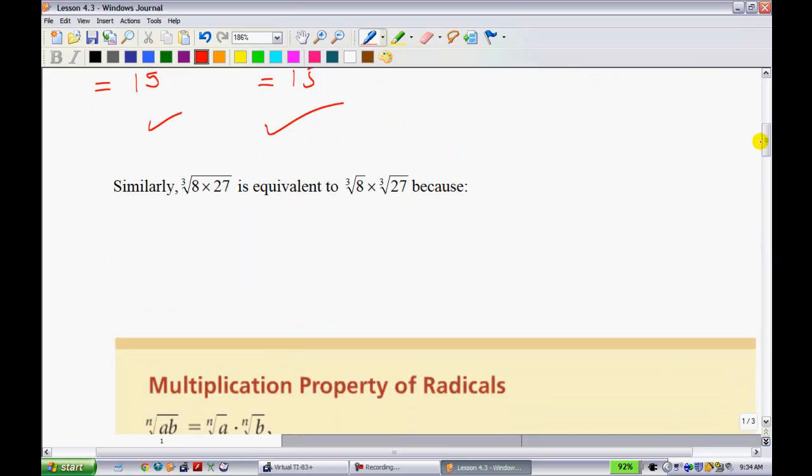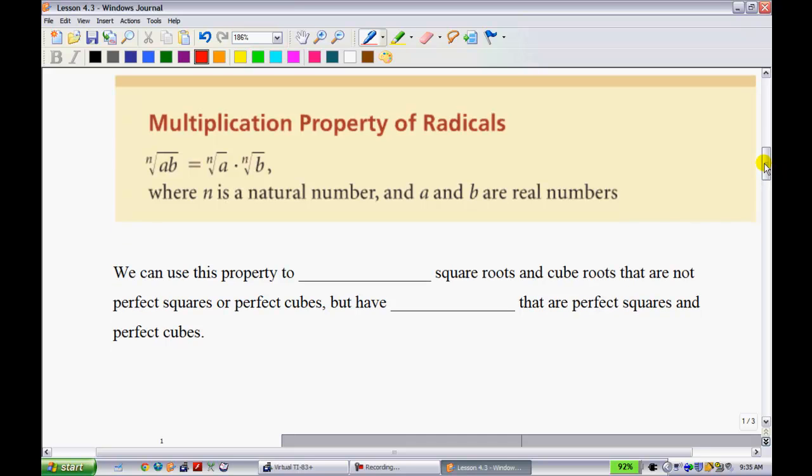Similarly, it works with cube roots. The cube root of 8 times 27 gives you 216. The cube root of 216 turns out to be 6. Knowing our perfect cube numbers, the cube root of 8 gives you 2, and the cube root of 27 is 3, and that is 6. So it follows this multiplication property of radicals.